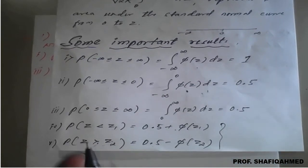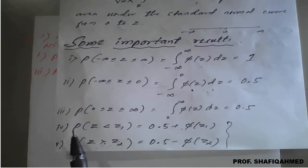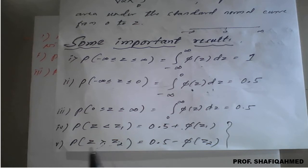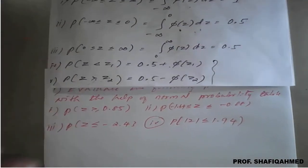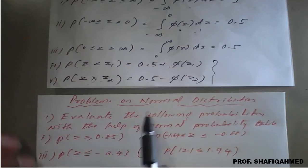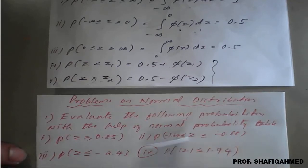We are going to use this most. Also important is the probability formula: P(Z < z1) is given as 0.5 plus phi(z1), and P(Z > z2). We will use these formulas here. With the help of this small recall, I want to take a new question as a problem on probability distribution.